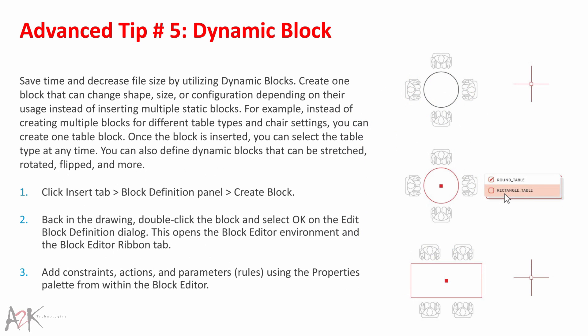Advanced Tip 5 – Dynamic Blocks. Save time and decrease file size by utilizing dynamic blocks. Create one block that can change shape, size or configuration depending on usage, instead of inserting multiple static blocks. For example, instead of creating multiple blocks for different table types and chair settings, you can create one table block and select the table type at any time. You can also define dynamic blocks that can be stretched, rotated, flipped and more. Click Insert tab, Block Definition panel, Create Block. Then double-click the block in the drawing, select OK on the Edit Block Definition dialog, which opens the Block Editor. Add Constraints, Actions and Parameters using the Properties palette from within the Block Editor.